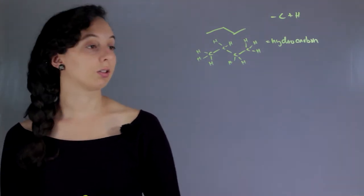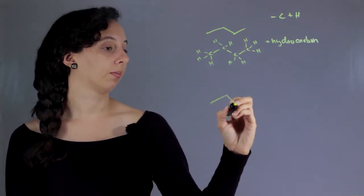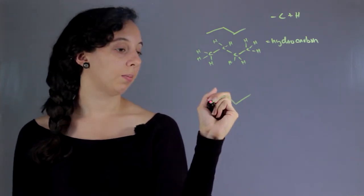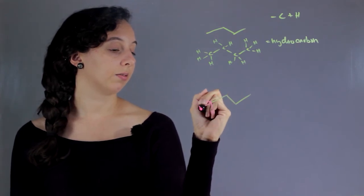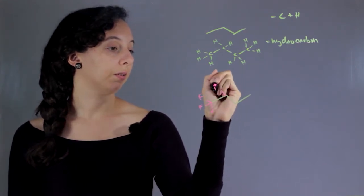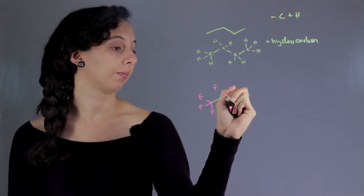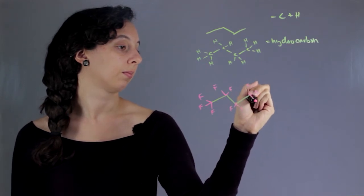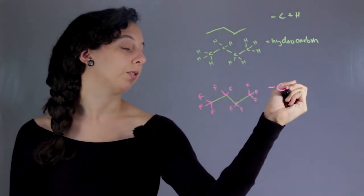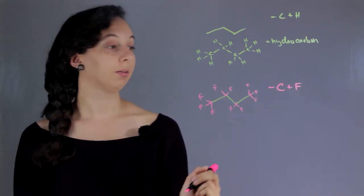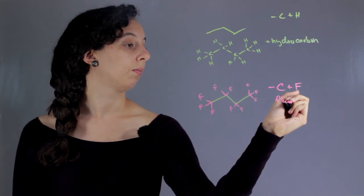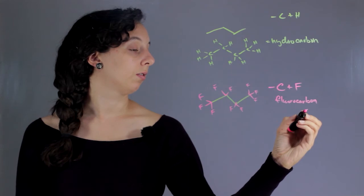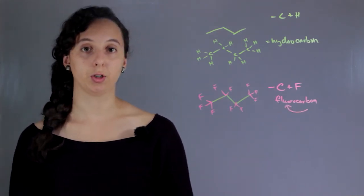Next let's look at a fluorocarbon. These are a little bit different because they have the same carbon framework, but they're actually going to have fluorine that replaces every hydrogen. So basically the requirements for this is just carbon and fluorine. Fluorine is spelled with that U right there because the British people won this one.